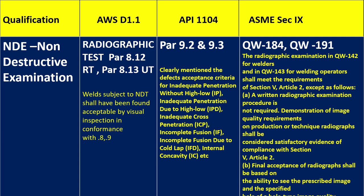For ASME Section 9, QW-184 and QW-191 cover NDT requirements. Radiographic examination is addressed in QW-142 for welders and QW-143 for welding operators. The minimum requirements include a written radiographic examination procedure, and demonstration of image quality requirements on the production radiograph shall be considered satisfactory evidence of compliance with Section 5, Article 2.